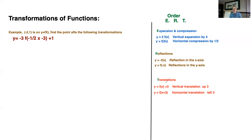The last thing is translation. If you have y equals f of x plus three outside the brackets, that means it's a vertical translation up three. But if you have x plus three inside the brackets — f of (x plus three) inside the brackets — then it's a horizontal translation, and you go opposite of the sign, so you go three to the left.